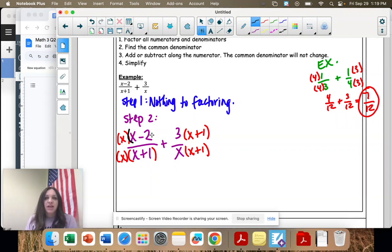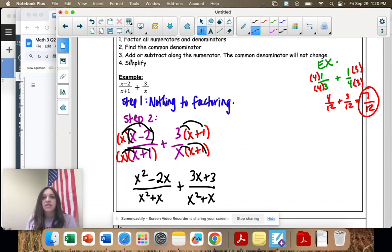Now I have x times (x-2), which is x²-2x over x²+x, plus 3x+3 over the same denominator, right? It's common. Step 3.